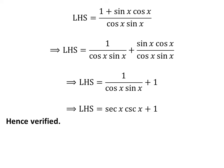We know 1 upon cosine of x is secant of x and 1 upon sin of x is cosecant of x. So, left hand side of the identity is equal to secant of x times cosecant of x plus 1. Thus, left hand side of the identity is equal to right hand side of the identity. Hence, verified the identity.